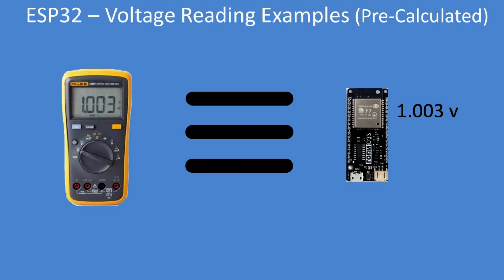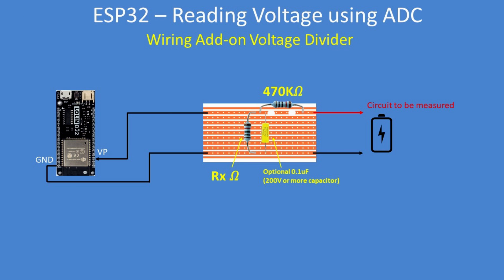In this demonstration I'll show you how you can use the ESP32 to measure voltages. We're going to use a voltage divider, and that's the wiring that needs to be added to the ESP32 ADC input.